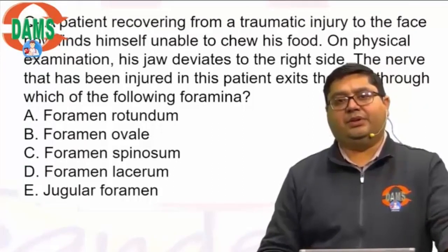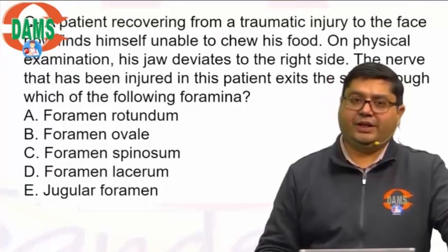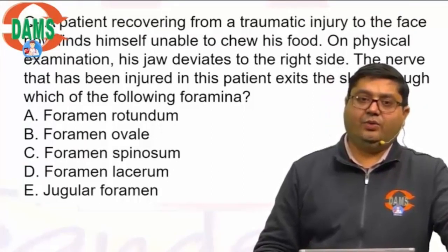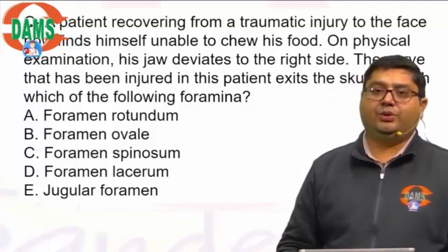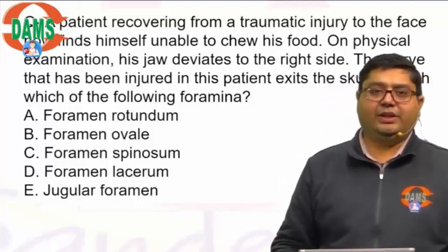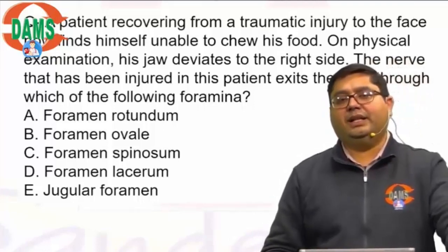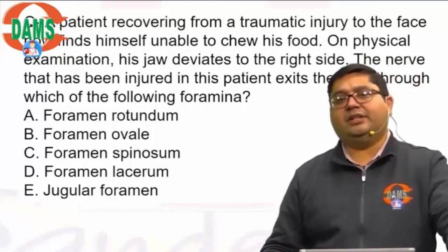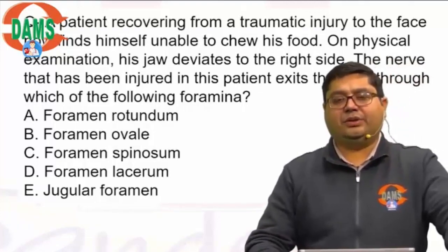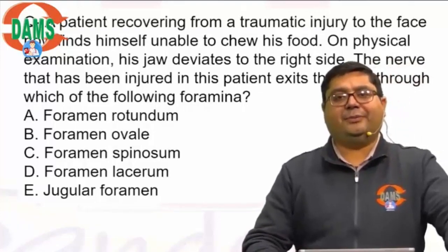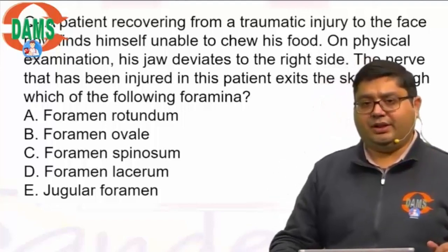You are observing a patient who is recovering from a traumatic injury to the face. His features include being unable to chew food, and on physical examination, the jaw is deviating. The nerve that has been injured exits through which foramen? Which nerve do you think is involved in this patient?